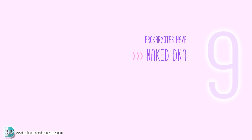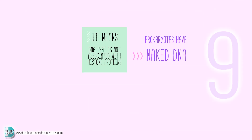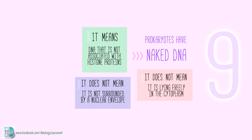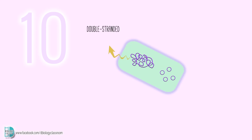Prokaryotes have naked DNA. Naked DNA refers to DNA that is not associated with histone proteins. It does not refer to the fact that it is not surrounded by a nuclear envelope, or that the DNA is lying freely in the cytoplasm. Bacteria cells usually have a double-stranded, helical, and circular DNA called the bacterial chromosome.